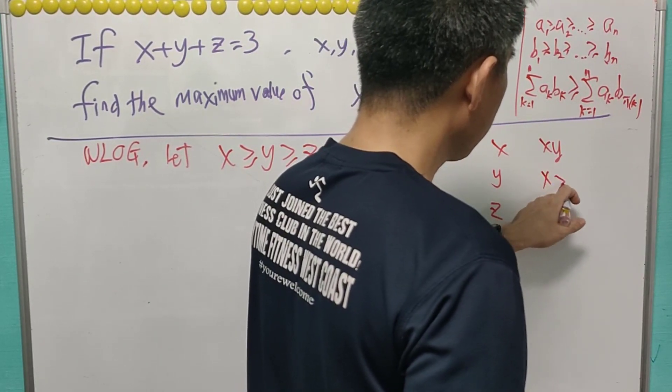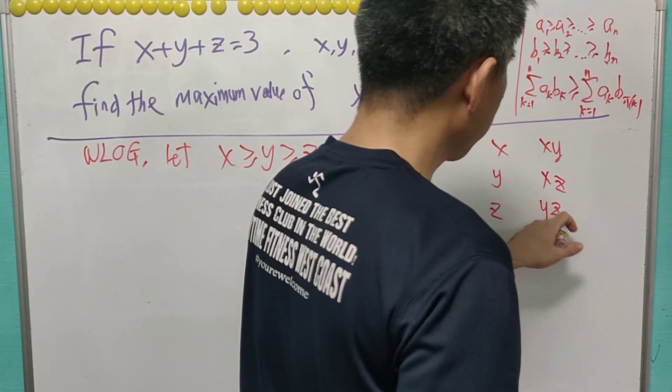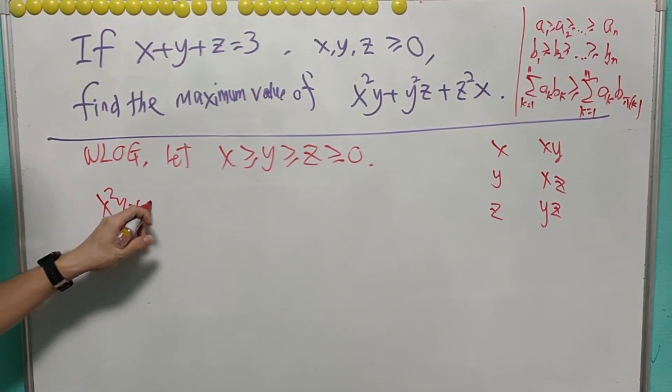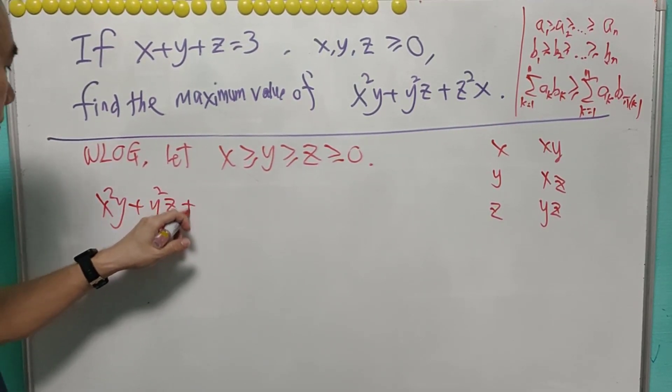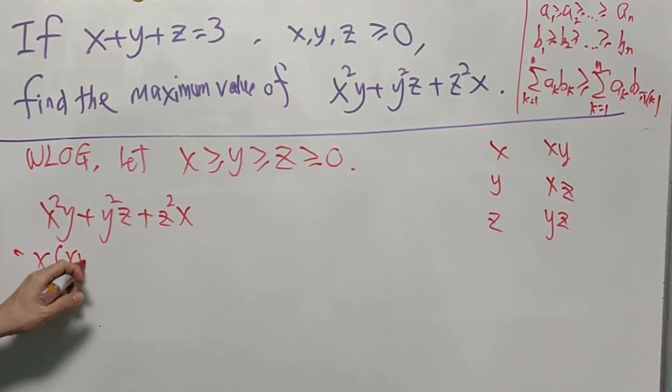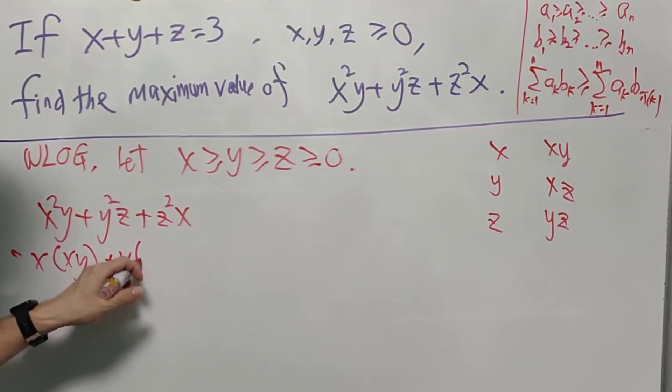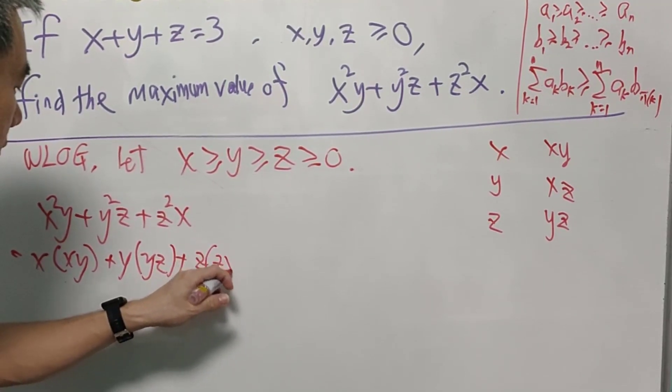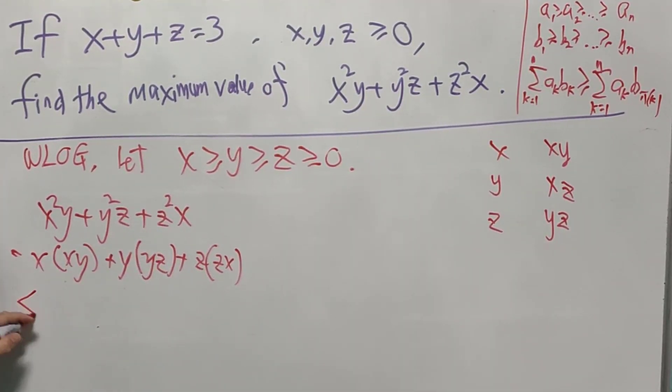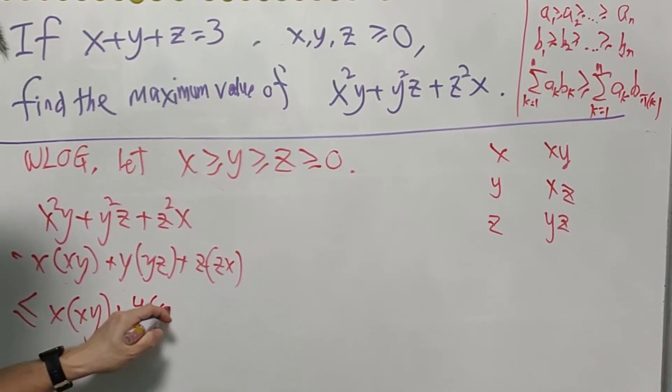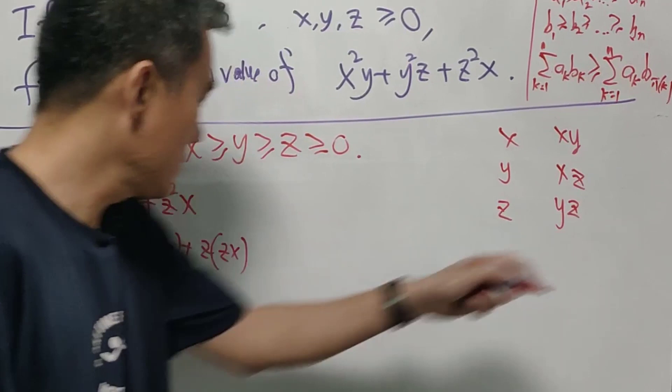So X squared Y, plus Y squared Z, plus Z squared X, it is actually equals to X times XY, plus Y times YZ, plus Z times ZX. So this expression will be less than equals to X XY, and Y XZ, and Z YZ.